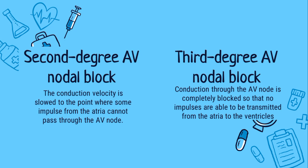Next is the third-degree AV nodal block. The conduction through the AV node is completely blocked so that no impulses are able to be transmitted from the atria to the ventricles. The low heart rate causes decreased blood flow to the brain, lungs, and body. This is a life-threatening condition that requires immediate medical attention.